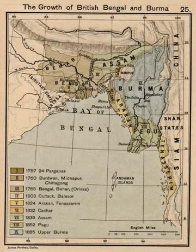The population of Eastern Bengal and Assam was 30,961,459 in 1901. The densely populated districts in East Bengal and the Surma and Brahmaputra valleys were home to Indo-Aryan ethnic groups, including the Bengalis and the Assamese. Hill districts were home to a predominantly Tibeto-Burman population, including groups like the Chakmas, Mizos, Nagas, Garos and Bodos. There were 18,036,688 Muslims and 12,036,538 Hindus. The remainder included Buddhists, Christians and animists.